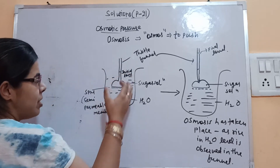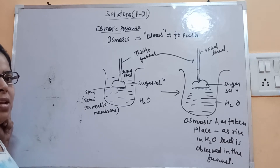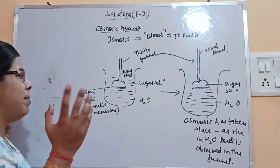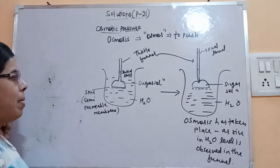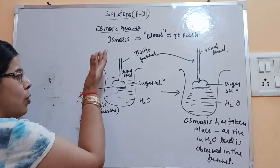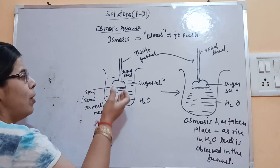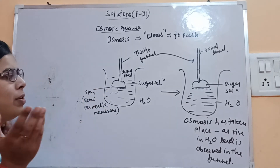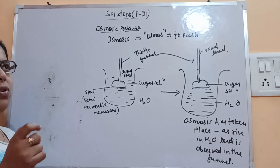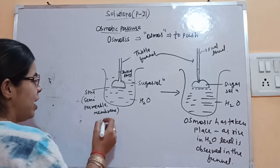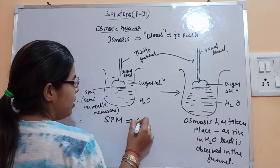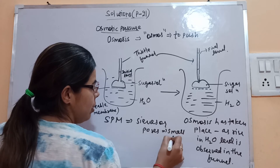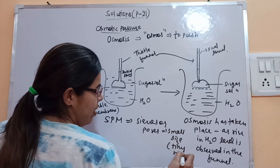We have separated the two by a semi-permeable membrane. The semi-permeable membrane allows only selective materials to pass through it — 'semi' means partial. It will allow only the solvent molecules to pass through and will not allow the solute molecules. This is the characteristic feature of the semi-permeable membrane, because SPM has pores or seeds of very small, tiny size — that's why only solvent molecules can pass through.